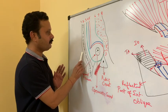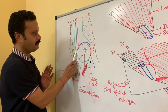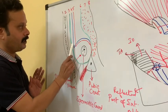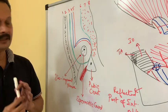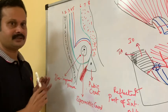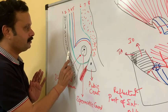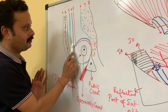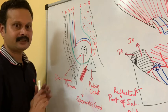Coming to the anterior wall: the anterior wall is formed by the skin, superficial fascia, external oblique muscle in its complete extent, internal oblique muscle in its lateral one-third, and more laterally the transversus abdominis.